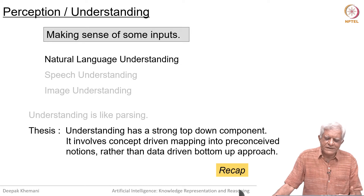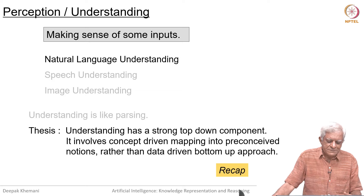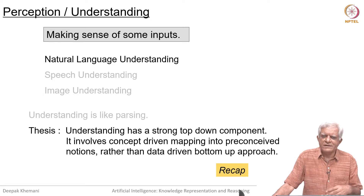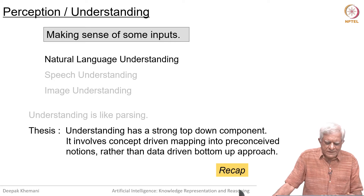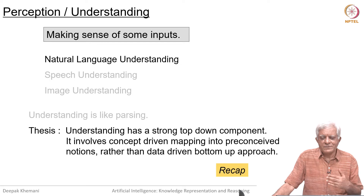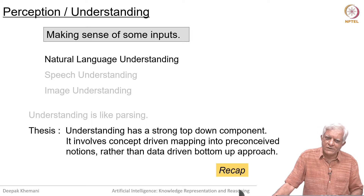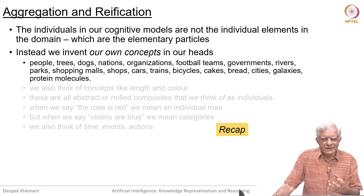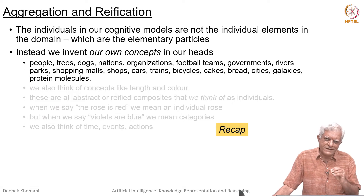When we were looking at conceptual dependency we said that our goal is to understand natural language sentences and stories, and by making sense we meant that we map them onto some internal representation, which in our case happens to be in first order logic. But what is more important is that understanding has a top-down component — it involves concept-driven mapping into preconceived notions. We already know what it means to buy, to sell, to drive a car, rather than a data-driven bottom-up approach. We want to accept sentences and try to see where they fit into the knowledge that we already know, and that knowledge is what we are trying to represent.